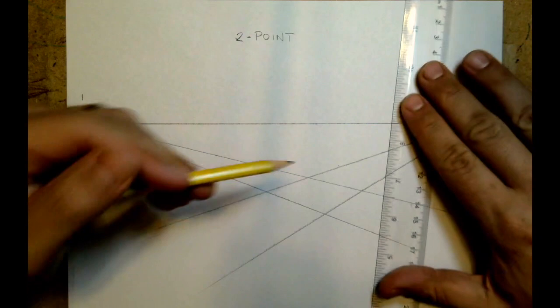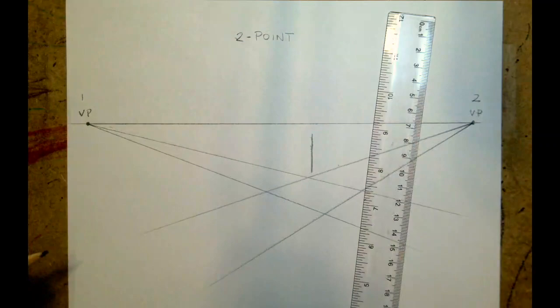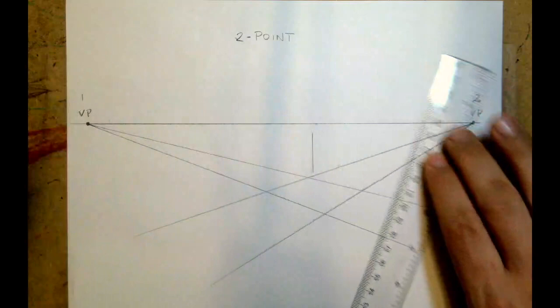What I'm going to do then, where they intersect just above, I'm going to place about a one-inch line below my horizon line that's vertical. That's going to be the corner of a box I create, which will become a building.